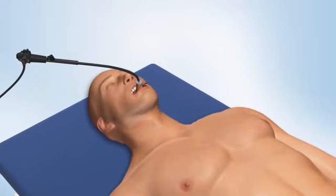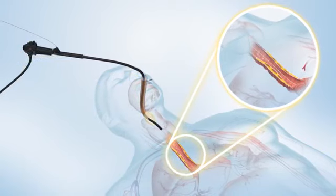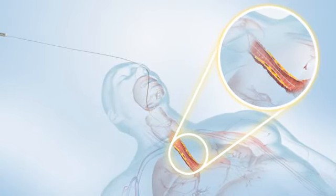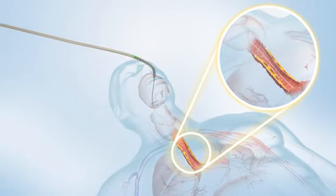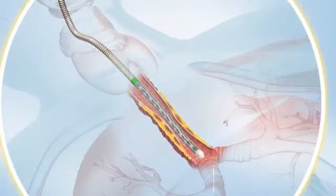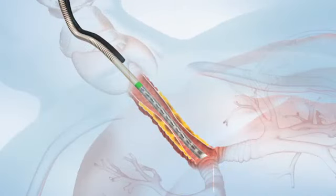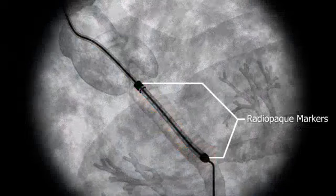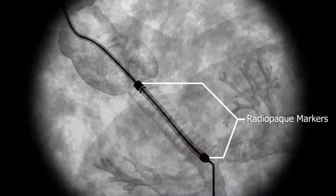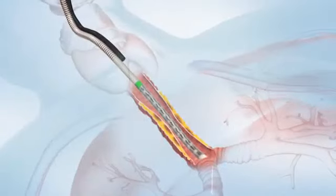Once the stricture has been located, the delivery system is advanced over a 0.035 guidewire and through the stenosis. The stent body is positioned using fluoroscopic visualization of the radiopaque markers at the tip of the catheter and the distal end of the stent pod.